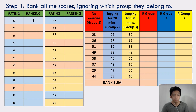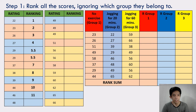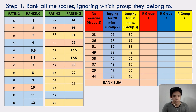Assigning ranks: 22 → rank 1; 23 → 2; 26 → 3; 27 → 4; two scores of 29 → both 5.5; 37 → 7; 38 → 8; 39 → 9; 44 → 10; 46 → 11; 48 → 12; three scores of 49 → all rank 14; 51 → 16; two scores of 56 → both 17.5; 58 → 19; 59 → 20; 60 → 21; 62 → 22; 65 → 23; 66 → 24.